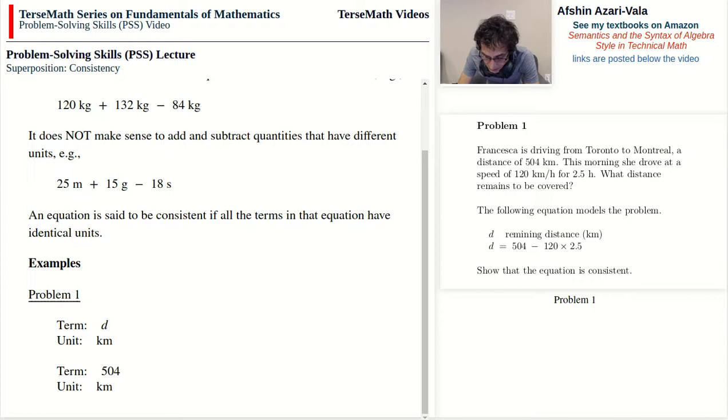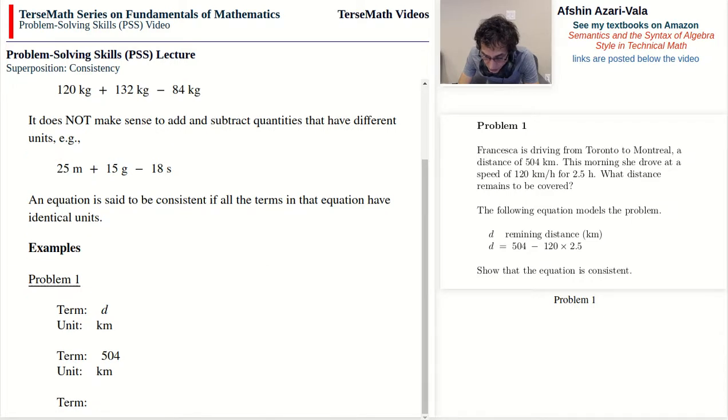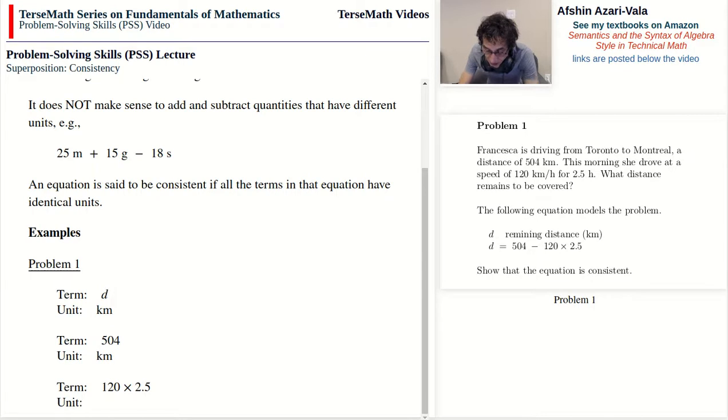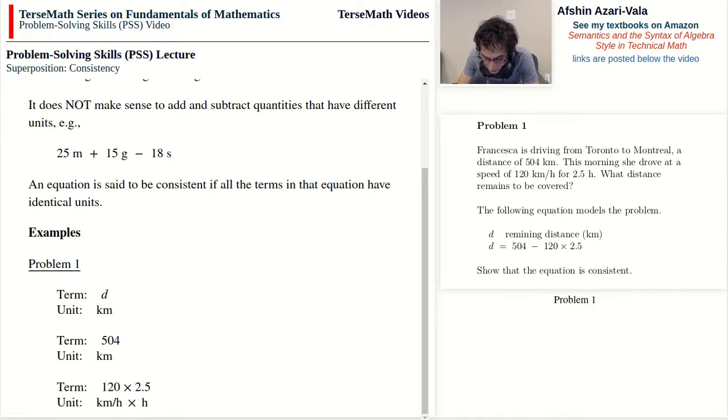And next we have the term 120 times 2.5. Now this one is pretty interesting. To work out the unit of this term, we are going to write the unit for 120 and also the unit for 2.5 and then multiply them. 120—we go back to the body of the word problem—the unit is kilometers per hour, and for 2.5 the unit is hours. So we now have kilometers per hour times hours. And of course the hours cancel out, and we will end up with kilometers as the final unit.